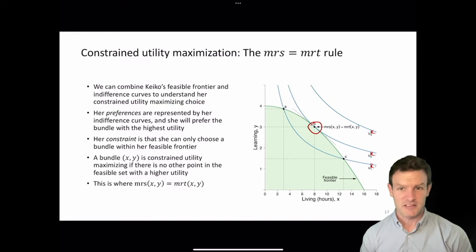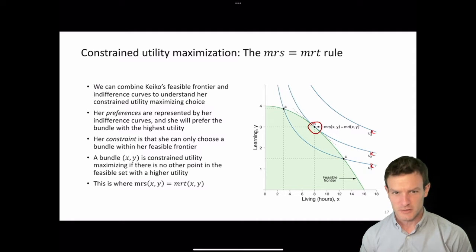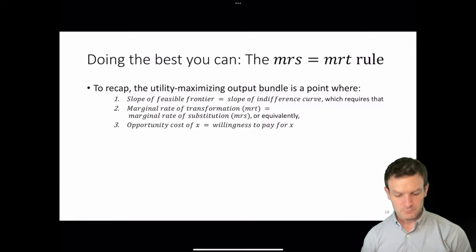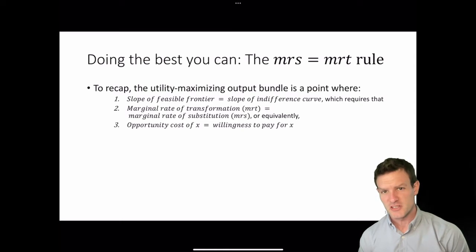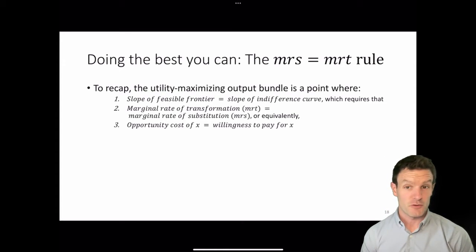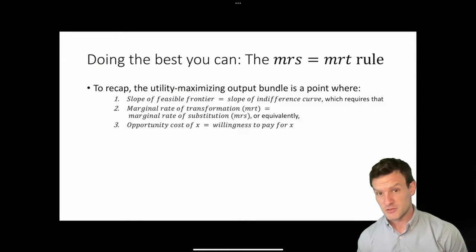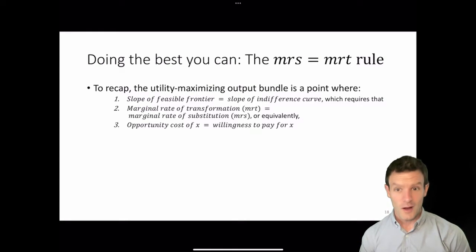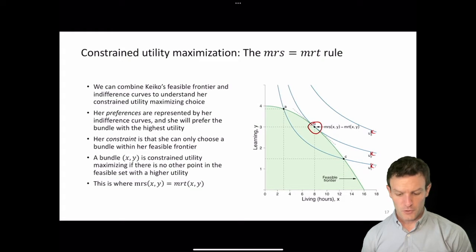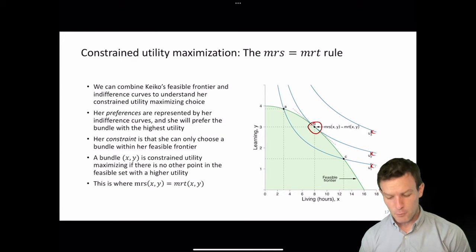Therefore, at her utility maximum, she reaches a point where MRS equals MRT — where the slopes of the two are equal. To recap: the utility-maximizing bundle is the point where the slope of the feasible frontier equals the slope of the indifference curve, which is where the marginal rate of transformation equals the marginal rate of substitution, which is where her opportunity cost of x in terms of y equals her willingness to pay for x in terms of y.